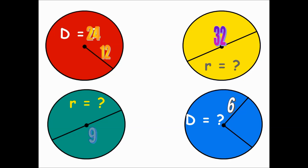Therefore, the radius is the diameter divided by 2, so the radius of the yellow circle would be 16 — 32 divided by 2 is 16. If the diameter is 9 for the green circle, the radius is 9 divided by 2, which is 4.5. For the blue circle, the radius is 6, so the diameter is 2 times 6, which gives us 12.